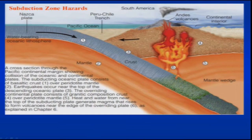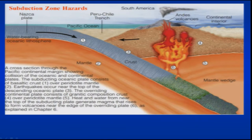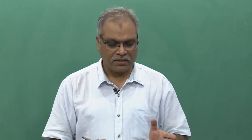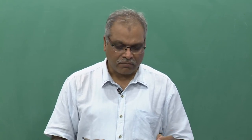Now, coming to the subduction zone hazard, which is extremely dangerous. This type of zone is present along the southeastern margin of the Indian subcontinent — that is the Andaman-Sumatra subduction zone. Here we will see volcanic eruptions on the overriding plate, and many earthquakes which we classify as deep, shallow, or intermediate earthquakes.